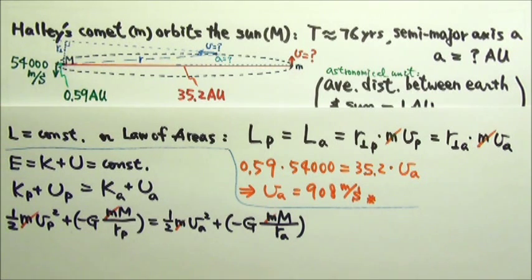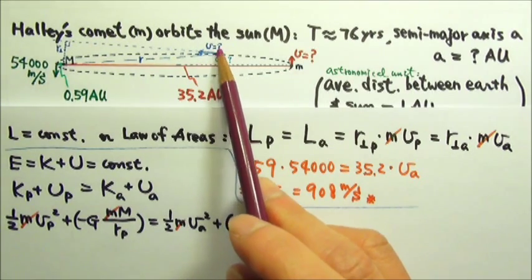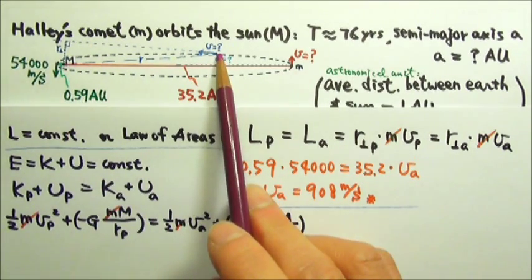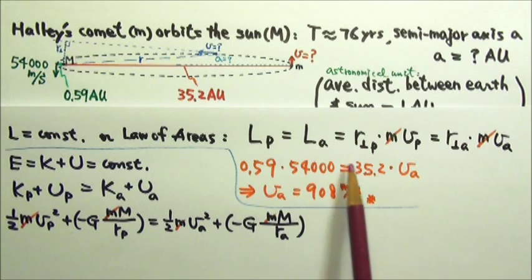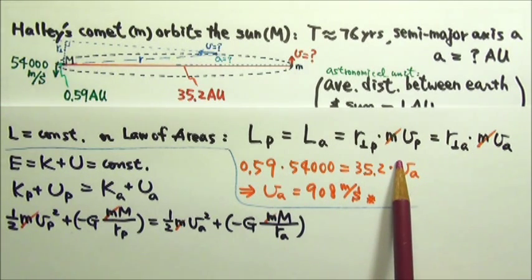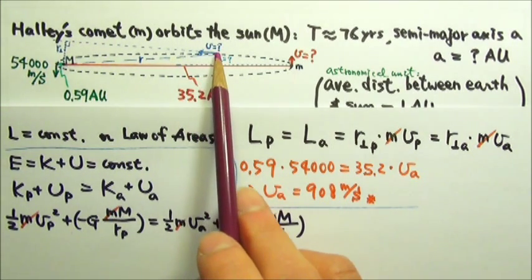However, if we want to find the speed at any other location, say over here, a distance r from the sun, the conservation of angular momentum would not be easy to use at all. Because at this location,